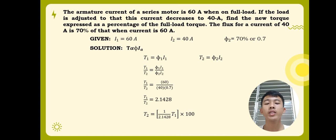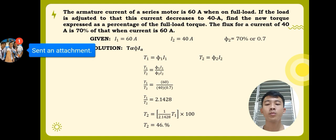Then, since what we're finding is the new torque expressed as a percentage of the full load torque, we need to manipulate these values and isolate T2, which will yield T2 is equal to 1 over 2.1428 times 100. And computing this using calculator, we can have T2 is equal to 46%. Therefore, the new torque expressed as a percentage of the full load torque is 46%. That would be all for the first problem.